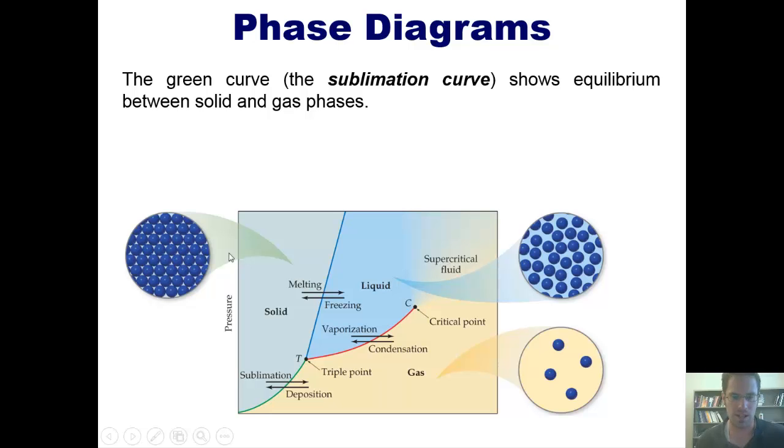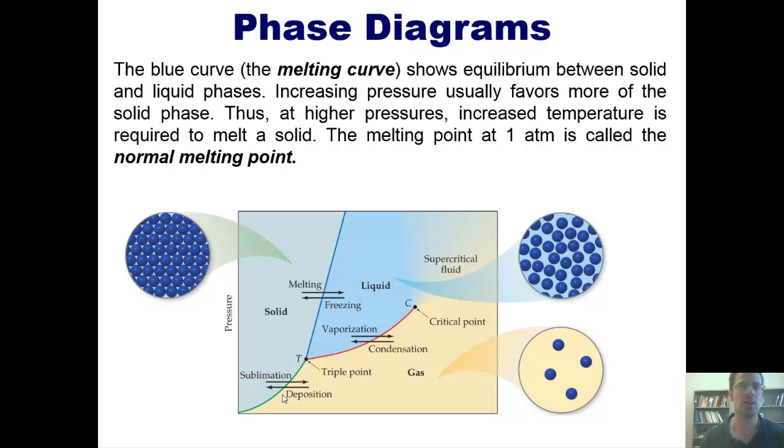The green curve right down here is the sublimation curve, that shows the equilibrium between solid and gas phases. The blue curve, called the melting curve, shows the equilibrium between solid and liquid phases.